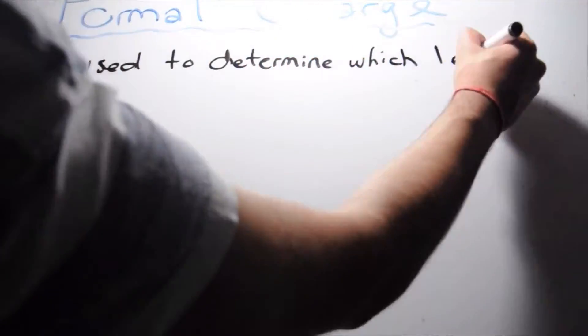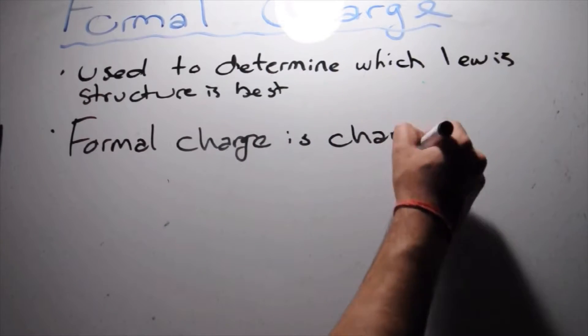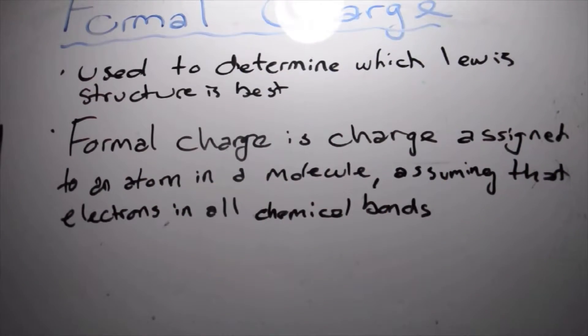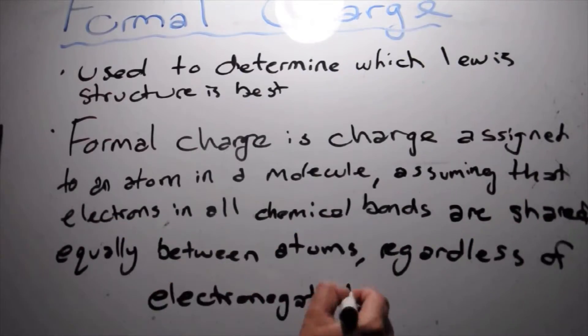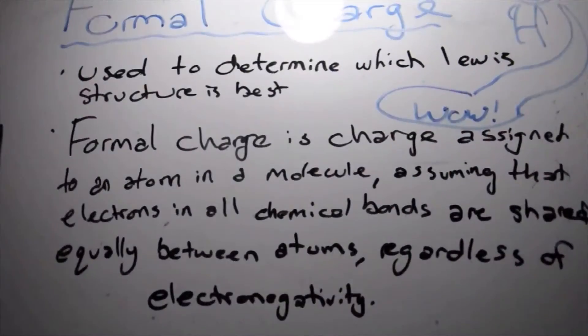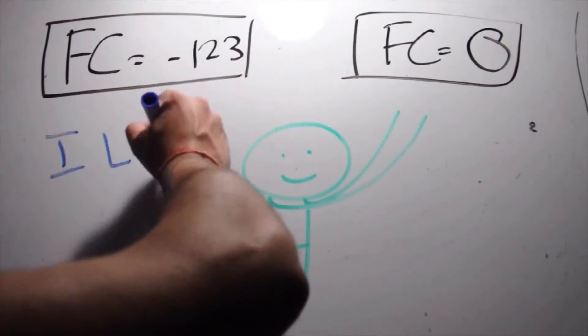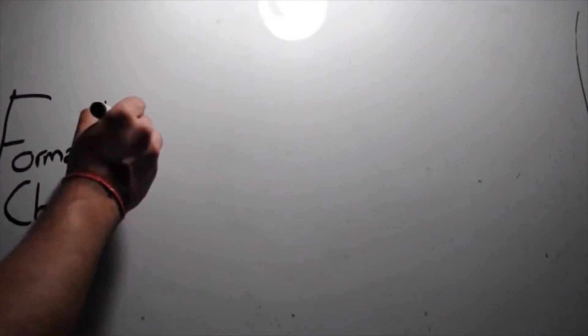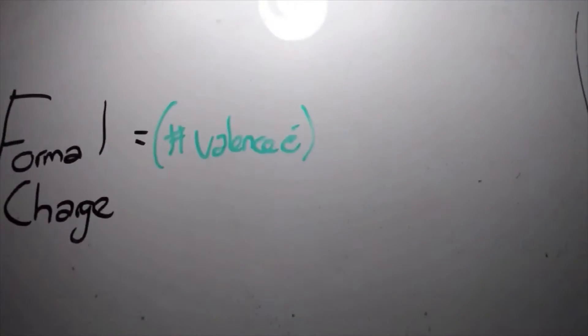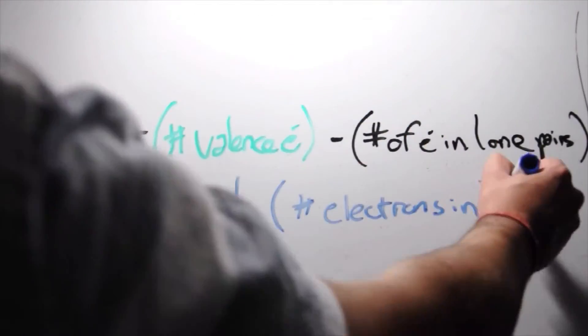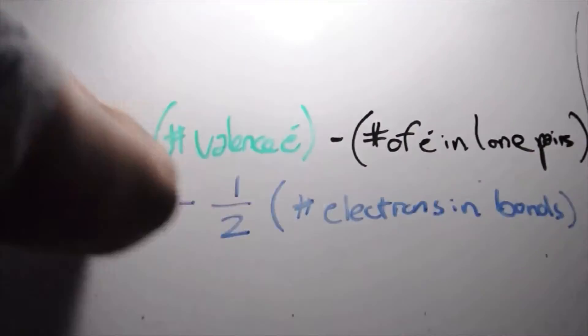Formal charge is used to determine which Lewis structure is preferred. Formal charge is the charge associated to an atom in a molecule or ion, assuming that electrons in all chemical bonds are shared equally between atoms, regardless of electronegativity. The Lewis structure with the atoms having a formal charge value closest to zero, or the charge of the ion, is preferred. The steps to determine the formal charge is simple. You take the number of valence electrons in the neutral atom, you subtract the number of electrons in lone pairs, as well as half the number of electrons in covalent bonds.